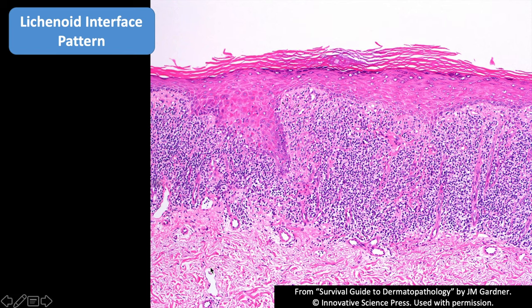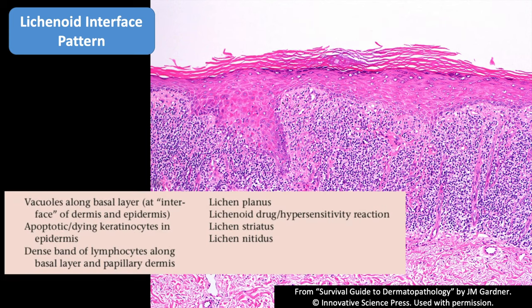If you see a thick band of lymphocytes and wonder whether this is truly a lichenoid interface, go down closer and look for dying keratinocytes. True lichenoid interface dermatitis should have dying keratinocytes at the basal layer somewhere. This is an example of lichen planus, one of the prototypic diseases of lichenoid dermatitis, but there are a variety of others that can have lichenoid change.